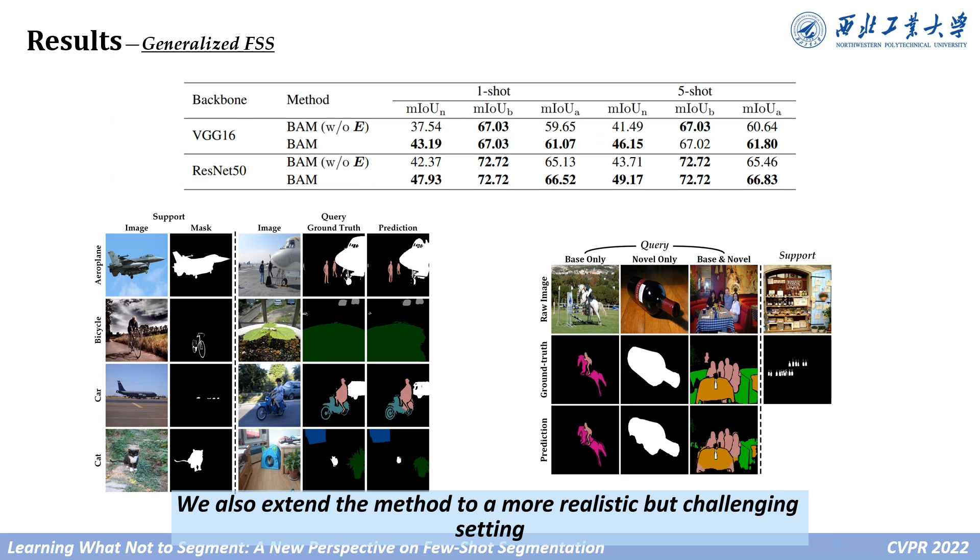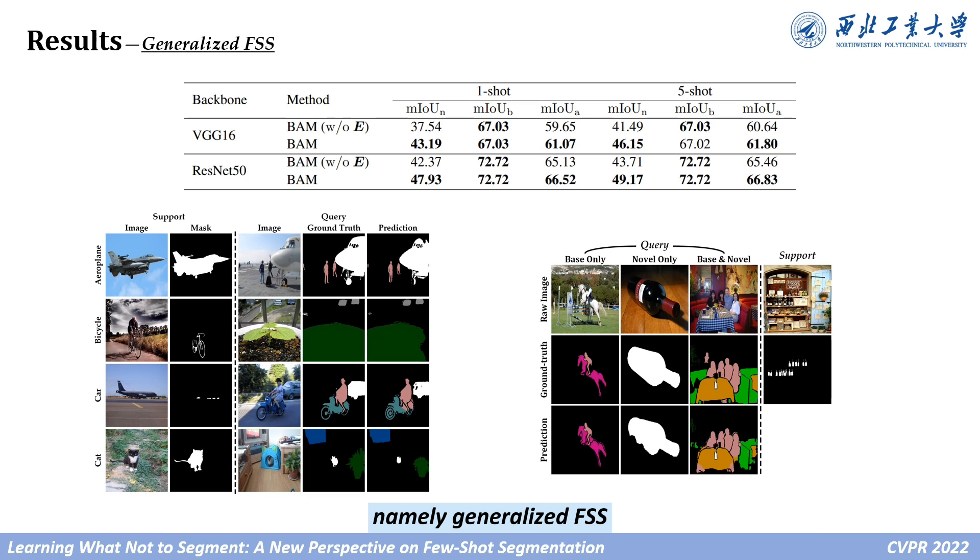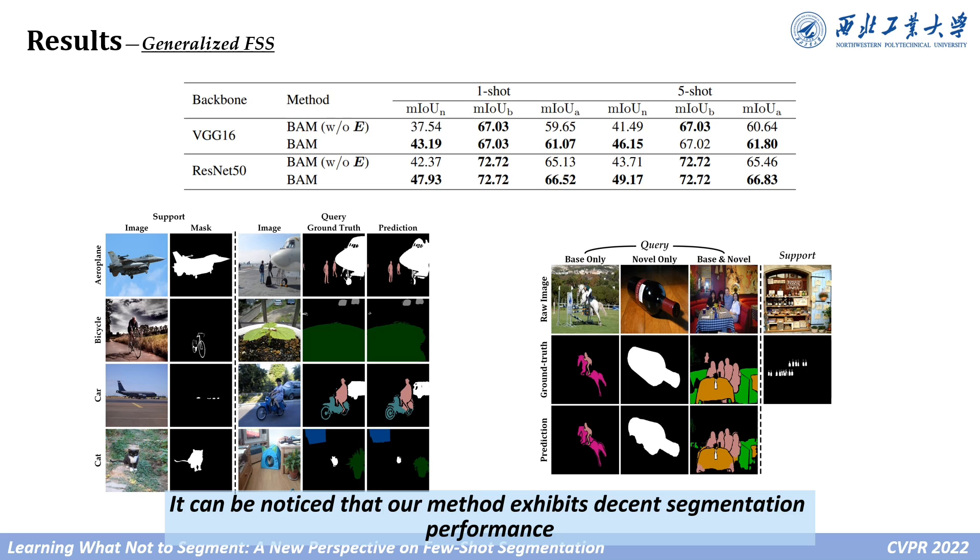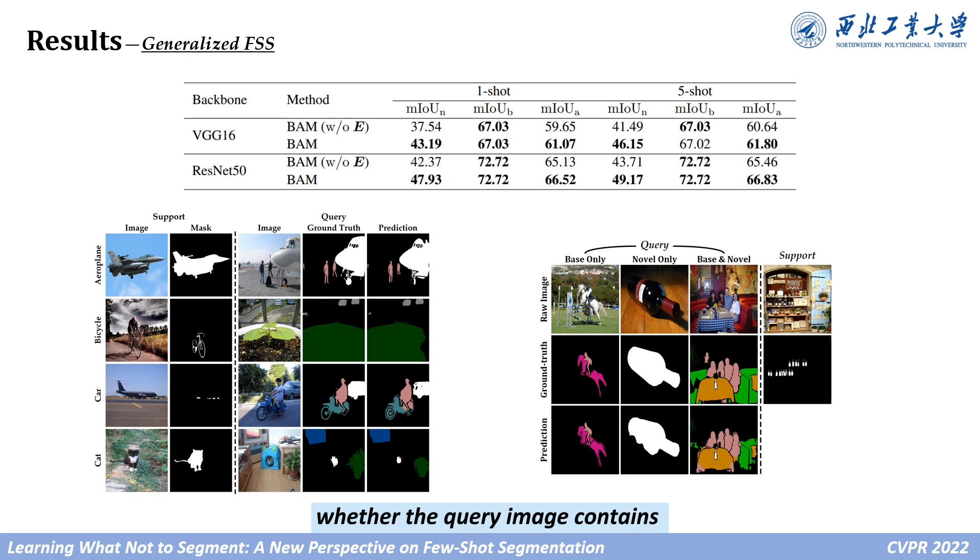We also extend the method to a more realistic but challenging setting, namely generalized few-shot segmentation, where the pixels of both novel and base classes are required to be determined. It can be noticed that our method exhibits decent segmentation performance, whether the query image contains only base class objects, only novel class objects, or both.